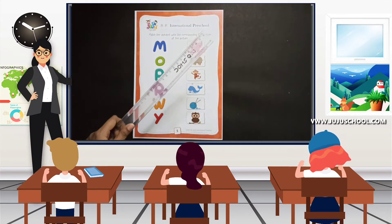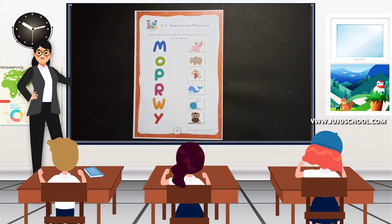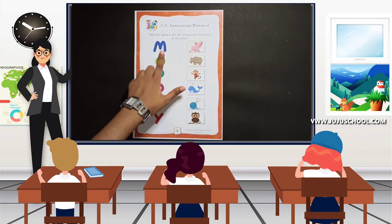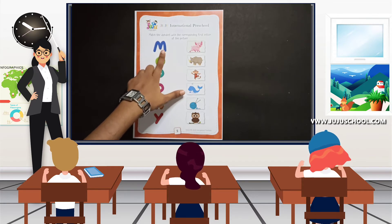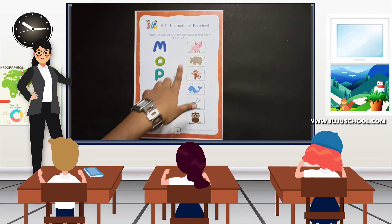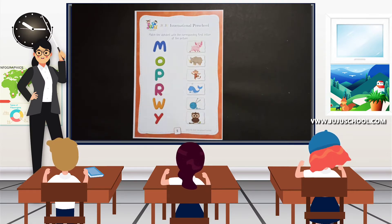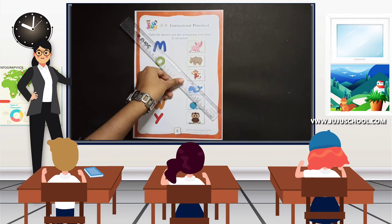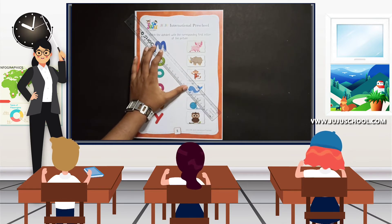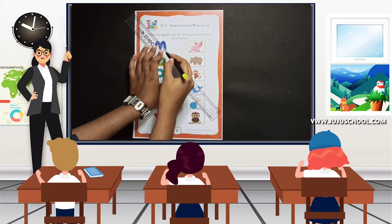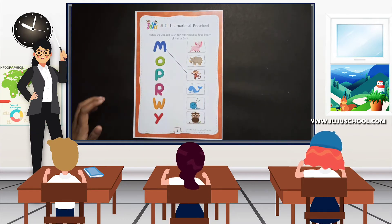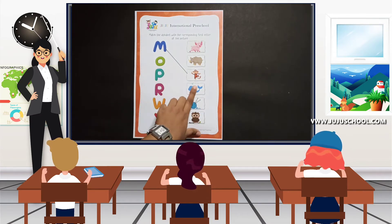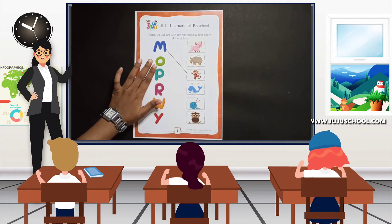Now take your scale and your pencil. First we'll start with letter M. What picture starts from the first letter M? Is it rhinoceros? No. Is it monkey? Yes! Now take your scale and your pencil, drop it straight away from M to the monkey and draw a gentle line. That's great — monkey starts from the letter M. M for monkey.